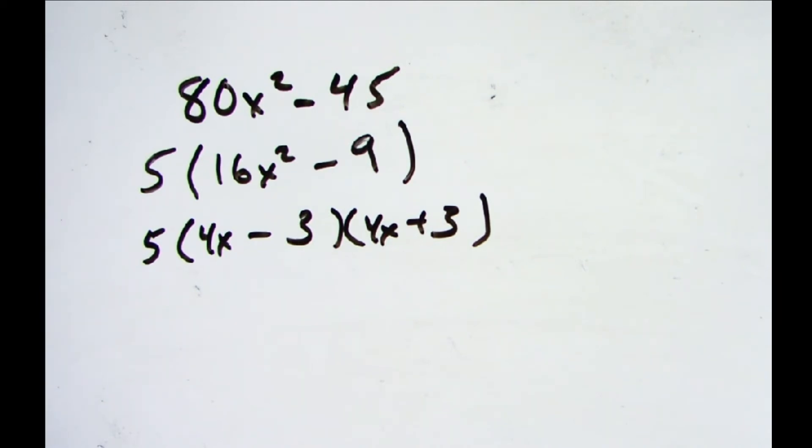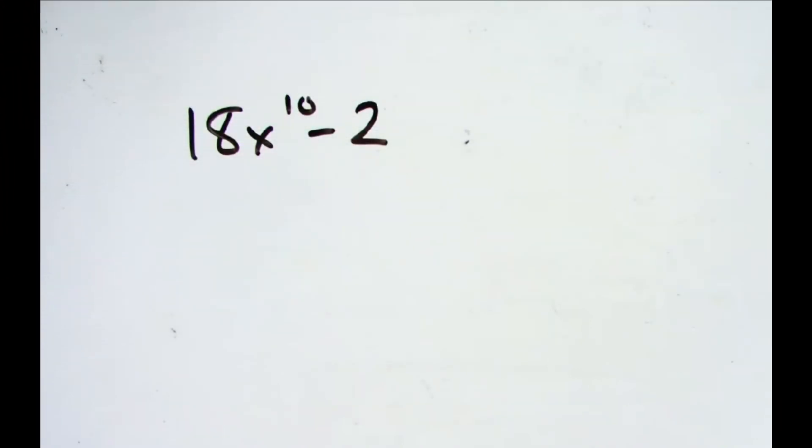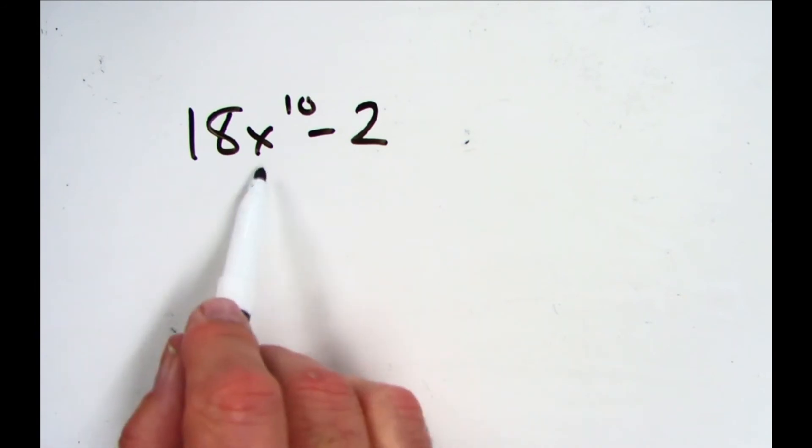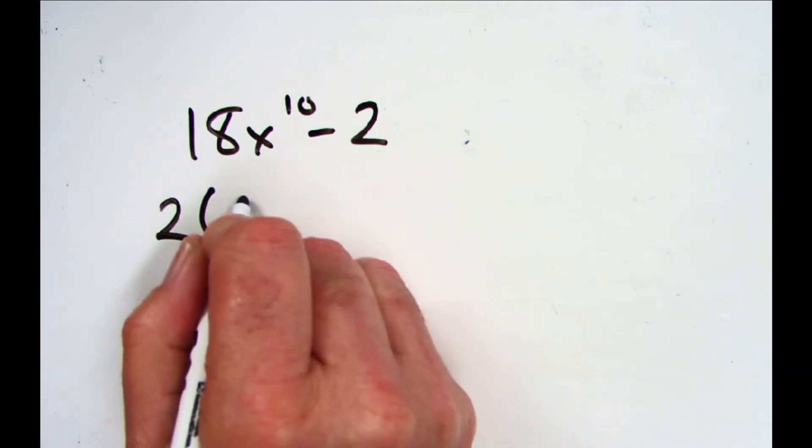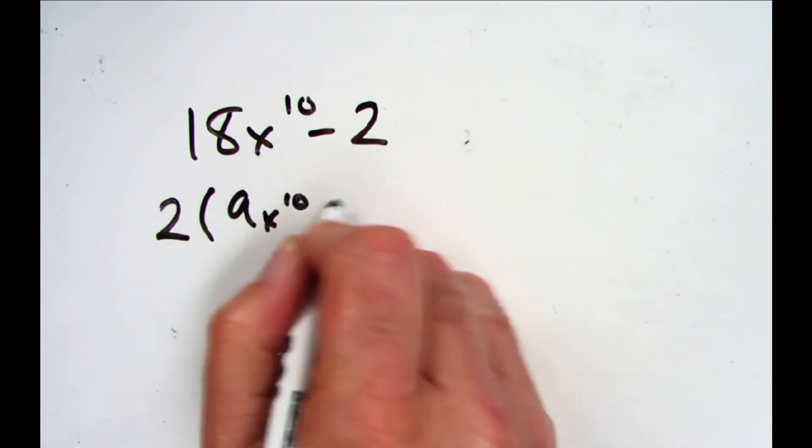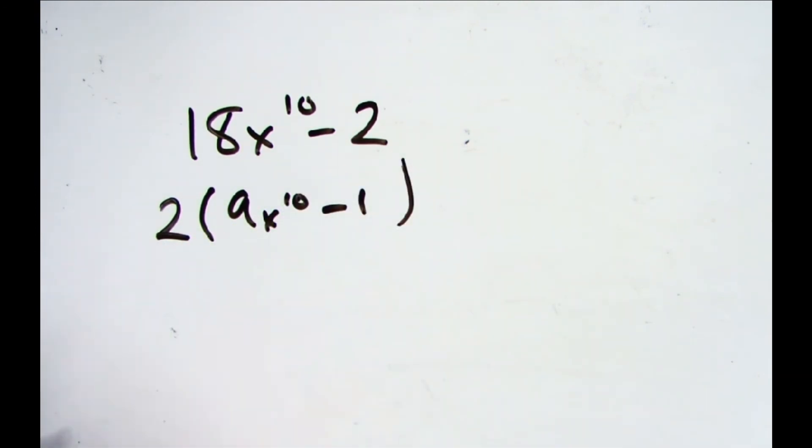There was a case where we did greatest common factoring, then difference of squares. I chose this problem just because it's an awfully awkward looking problem: 18x¹⁰ - 2. The only perfect square there is x to the 10th - anything to an even power is a perfect square. But 18 is not, 2 is not. Still, our basic rule that we're using today is take out a common factor. Between 18 and 2 you can take out a 2. So you divide both by 2, you get 9x¹⁰ - 1.